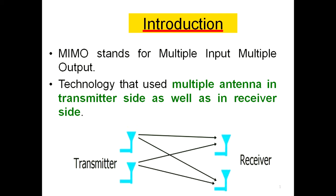Multiple Output means the transmitter antenna will give different versions — a number of versions — of the same input that is transmitted by the transmitter. That is the meaning for MIMO.